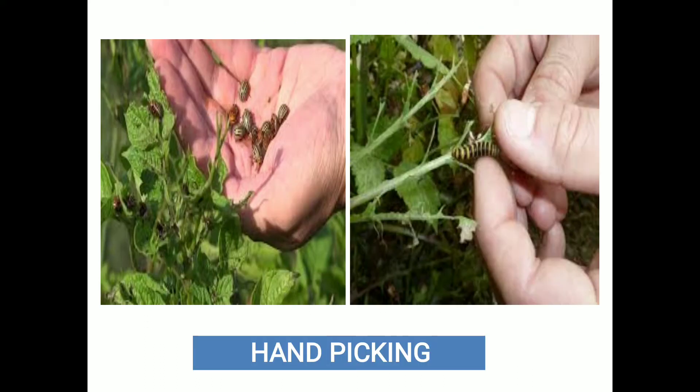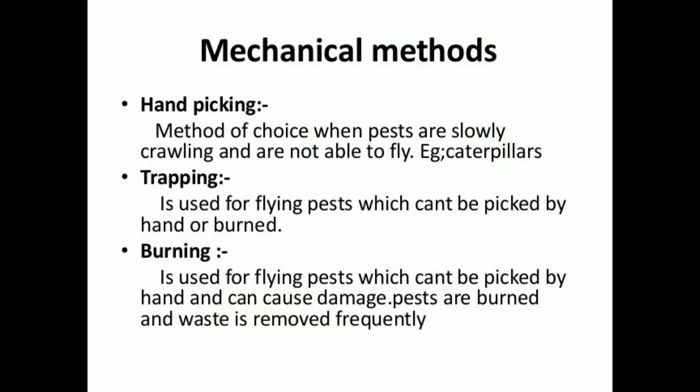In case of hand picking, we collect the insect with the help of hand from the plant and directly put them into water or kerosene. We collect insects which are large in size, not able to fly, and unable to fast crawling. Such insects are collected and directly put into a bucket.